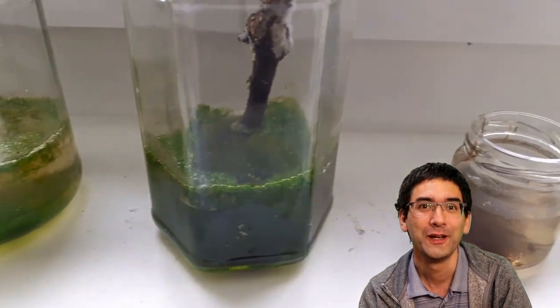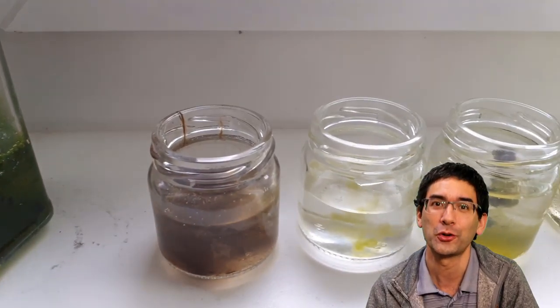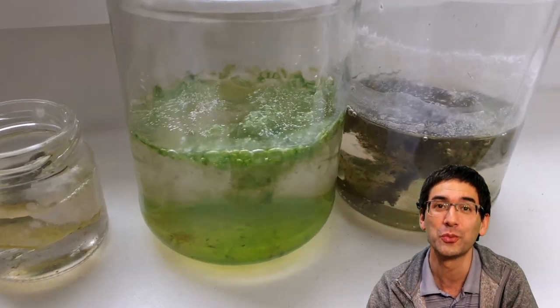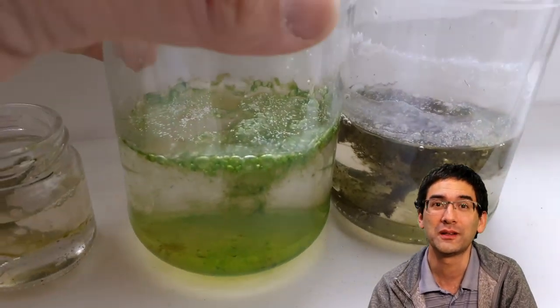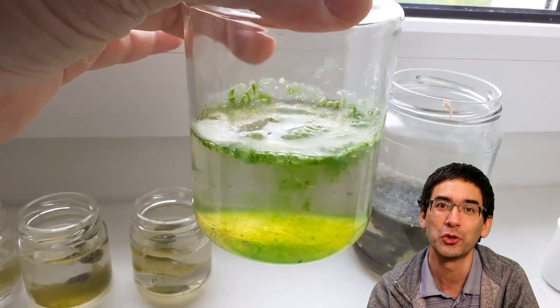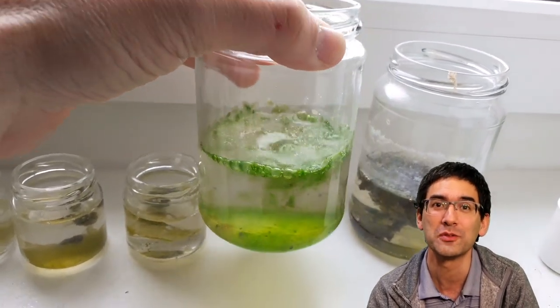You can see it in the different types of colors that I have here – different types of algae started to grow. It also has to do with the light conditions, the temperature, maybe the type of substrate that you're using. This different color simply shows you that evidently different organisms are growing there.